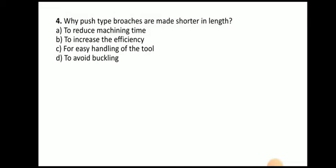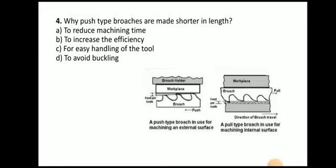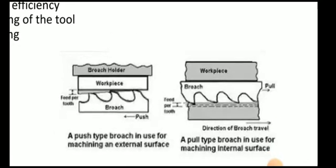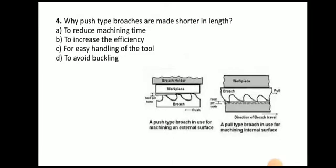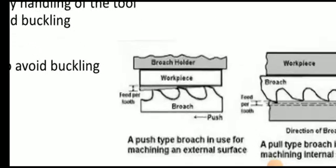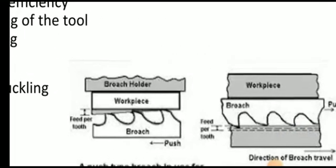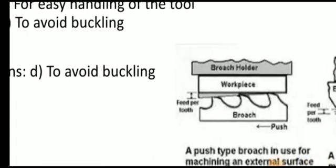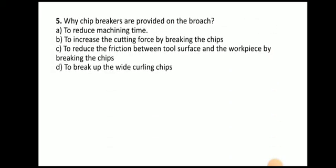Next question: why are push type broaches made shorter in length? There are two types of broaching — push type, used for machining external surfaces, and pull type, used for internal surfaces. The answer is to avoid buckling. Push type broaches are made shorter in length to avoid buckling.